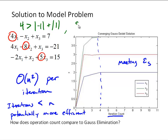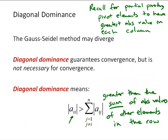So looking back at our model problem, we have to have the 4 is greater than the absolute value of negative 1 plus the absolute value of 1. And the 8 is greater than the absolute value of 4 plus the absolute value of 1. So that's our criterion for diagonal dominance. And the key about diagonal dominance is that it guarantees convergence, but it's not necessary. So the solution may still diverge even if the system is not diagonally dominant.